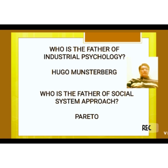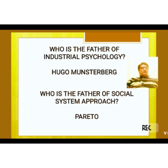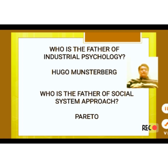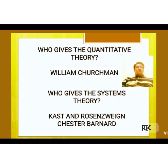Some important questions on the evolution of management thoughts: Who is the father of industrial psychology? The answer is Hugo Munsterberg. Who is the father of the social system approach? The answer is Pareto. Who gives the quantitative theory? The answer is William Churchman. Who gives the systems theory? The answer is Kast, Rosenzweig, and Chester Bernard.